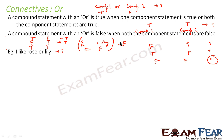So in case of AND, both or all the component statements have to be true, then only the compound statement will be true. Even if one component statement is false, the compound statement is false. In case of connective OR, if all the component statements are false, then only the compound statement is false; otherwise it is true. Even if one component statement is true, the compound statement is true.